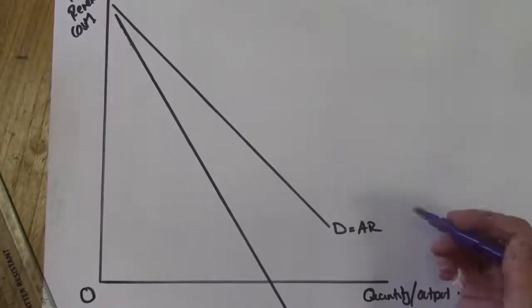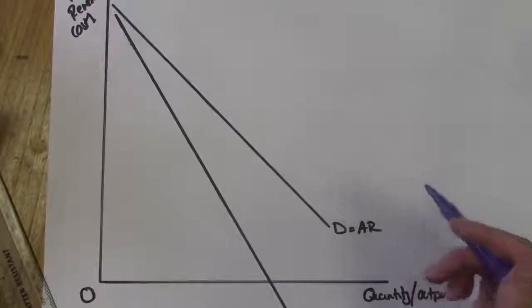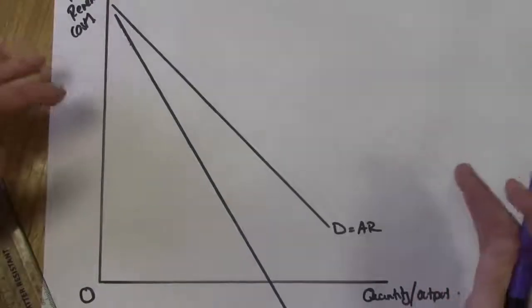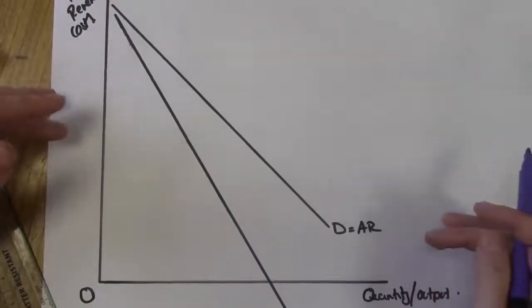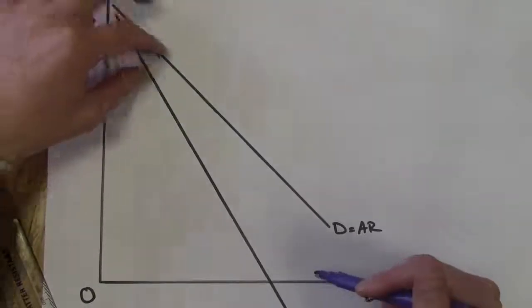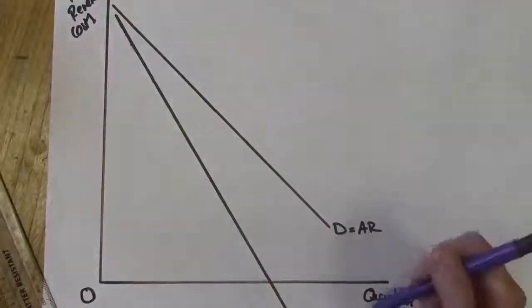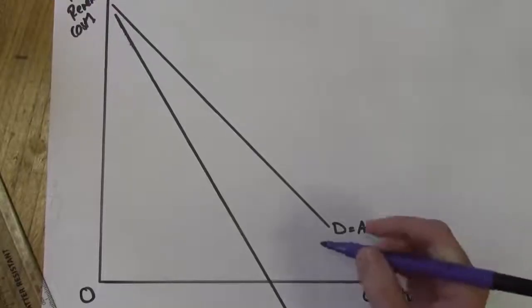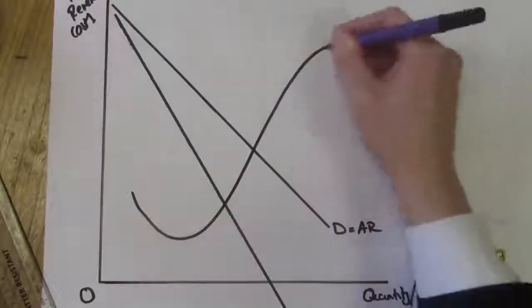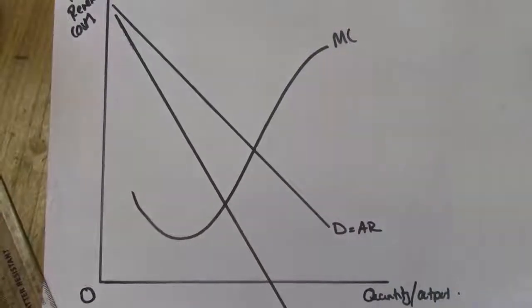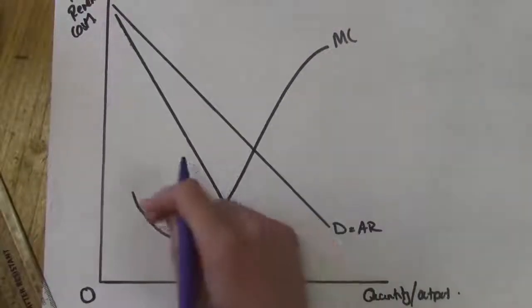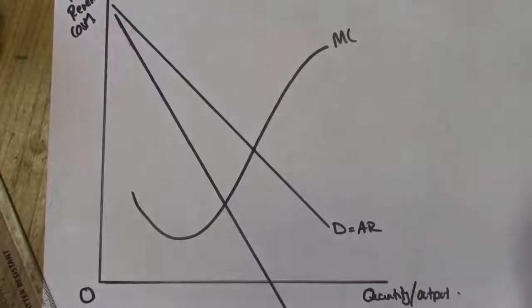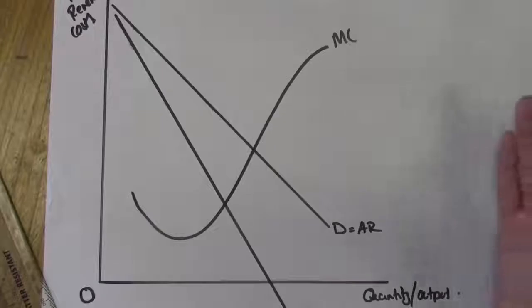Now unlike the perfectly competitive firm, AR and MR and demand were all the one curve. In this case, it's two separate curves. The two curves are downward sloping and notably the MR curve falls at twice the rate of the AR curve. Next curve we need to add on then now is our MC curve. Note the MC curve has not changed from perfect competition. It's still that tick shape curve.